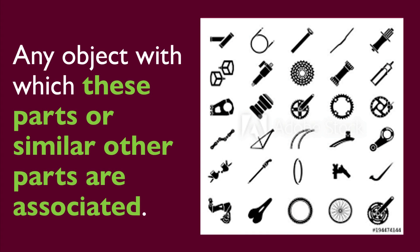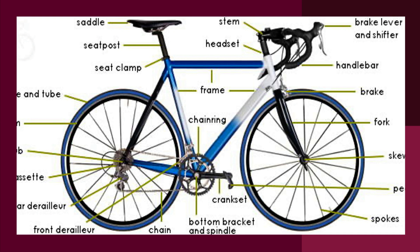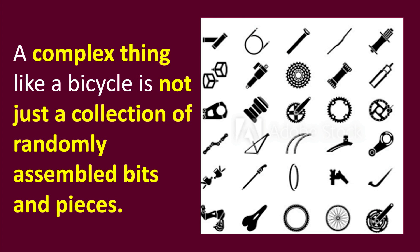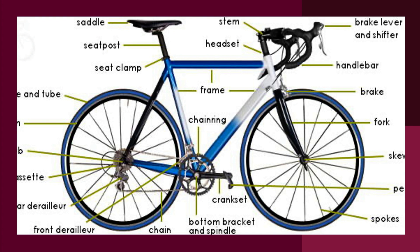When parts are arranged in a meaningful way, in a sensible manner, they give a proper shape. That shape may be that of a bicycle or a bike. So we can say that the arrangement and relations between the parts of an object — here, for example, a bicycle — are integrated into a complex process resulting in a meaningful form, and that form is a bicycle.